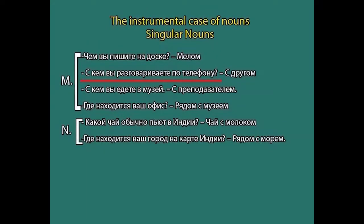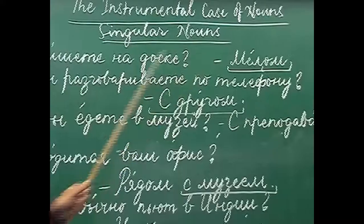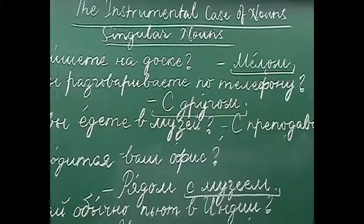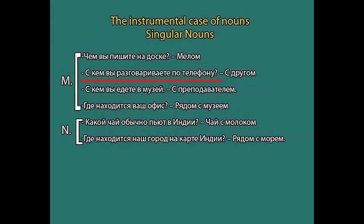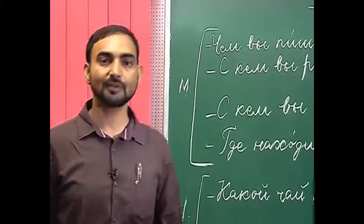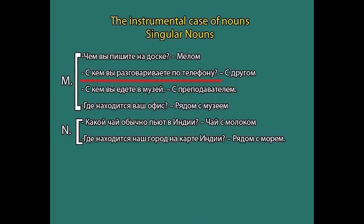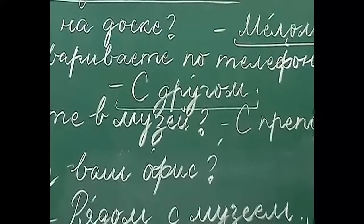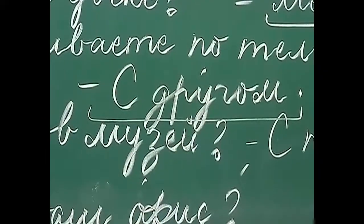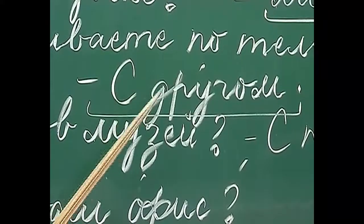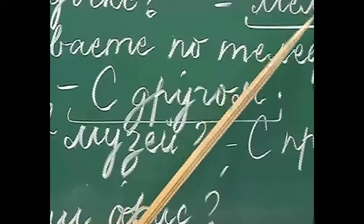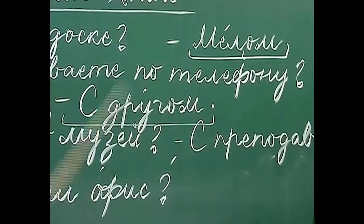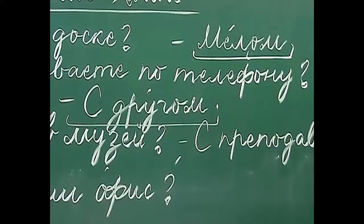The next example: 'с кем ты говоришь по телефону?' — with whom are you talking on the phone? The answer is 'с другом'. Here друг is a masculine noun with a hard ending — the hard ending consonant is 'г'. It will take the same ending as мел. So here also we add -ом: друг becomes другом — with a friend.